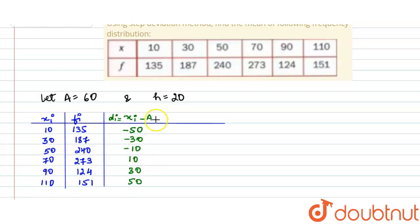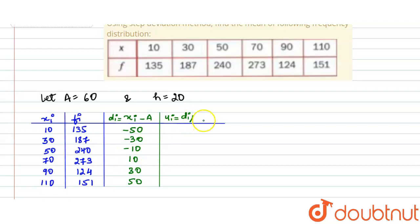Continuing the di values: 110 − 60 = 50. Now these di values can be further reduced using the class width h. We calculate ui = di / h. So: −50/20 = −2.5, −30/20 = −1.5, −10/20 = −0.5, 10/20 = 0.5, 30/20 = 1.5, and 50/20 = 2.5.